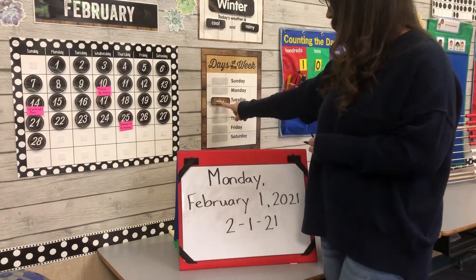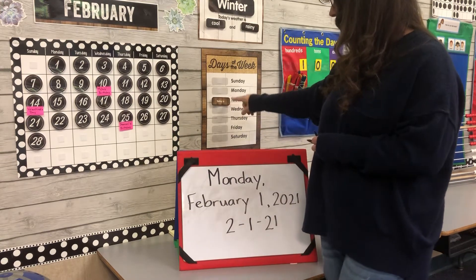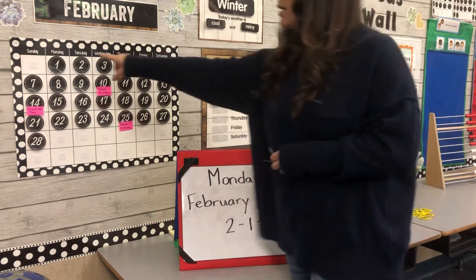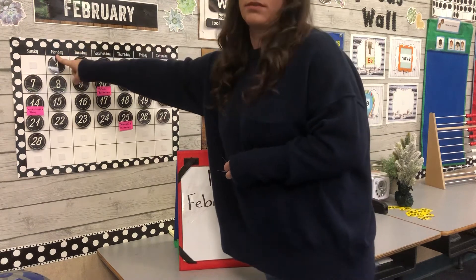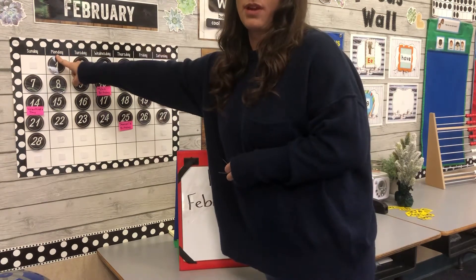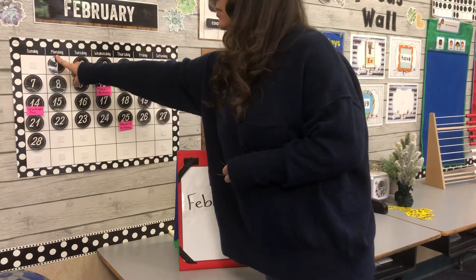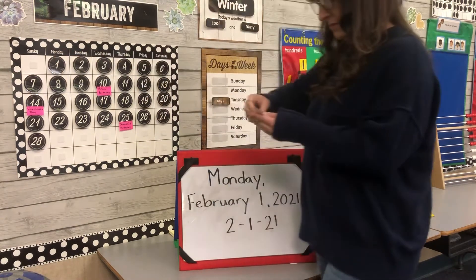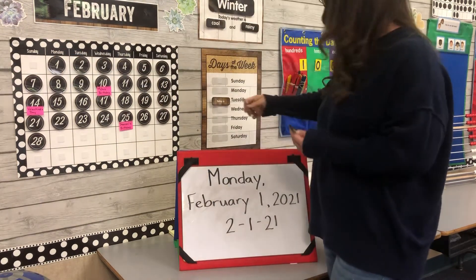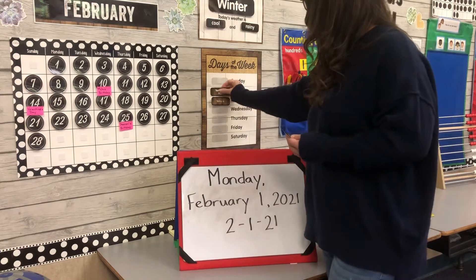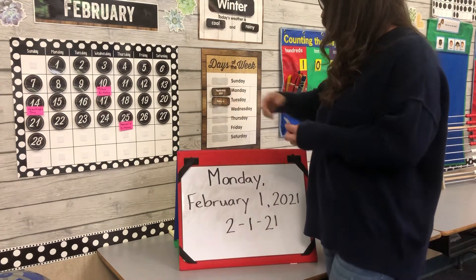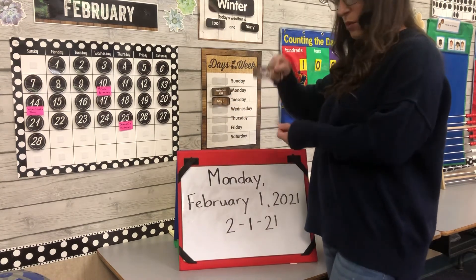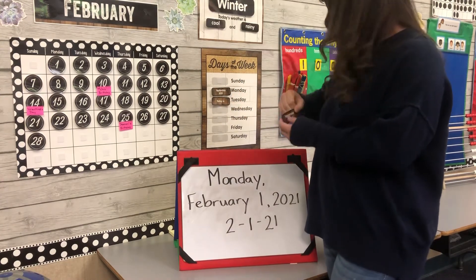Today is Tuesday. If today is Tuesday, what was yesterday? Yesterday was Monday. Yesterday was Monday, today is Tuesday, and tomorrow will be Wednesday.